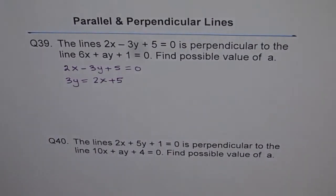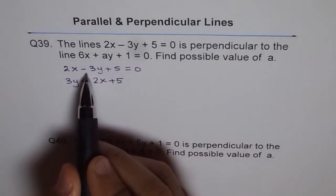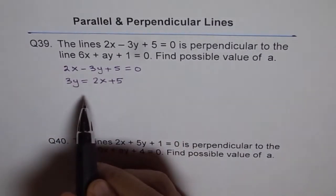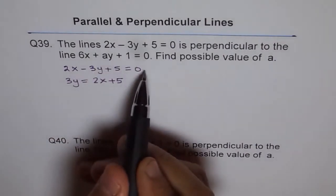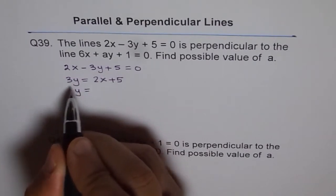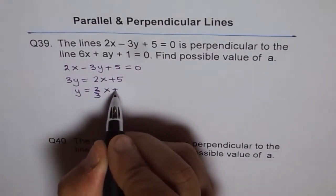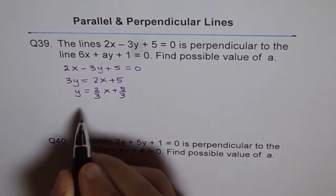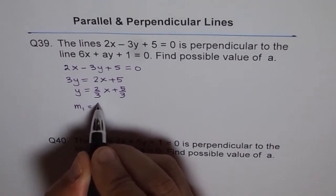You can do like this also. Earlier I was taking all of the terms and then dividing by minus 3. But this time I have taken minus 3y to the other side. It is one and the same thing. And now I am dividing by 3, so we get 2 over 3x plus 5 over 3. Therefore, the slope of the first line m1 is 2 over 3.